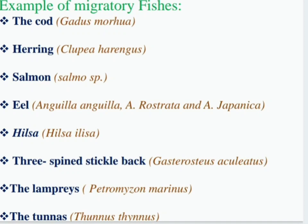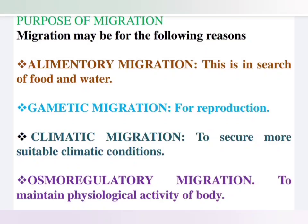What is the purpose of migration? Reason one: Food and Water — this is called Alimentary Migration. Reason two: Reproduction — this is called Gametic Migration.